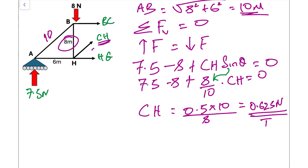Next, we find member BC using the moment equation. We choose to rotate about point H, which is convenient because both CH and HG pass directly through point H, meaning their perpendicular distance is zero and they contribute no moment. This leaves BC as the only unknown in the moment equation.